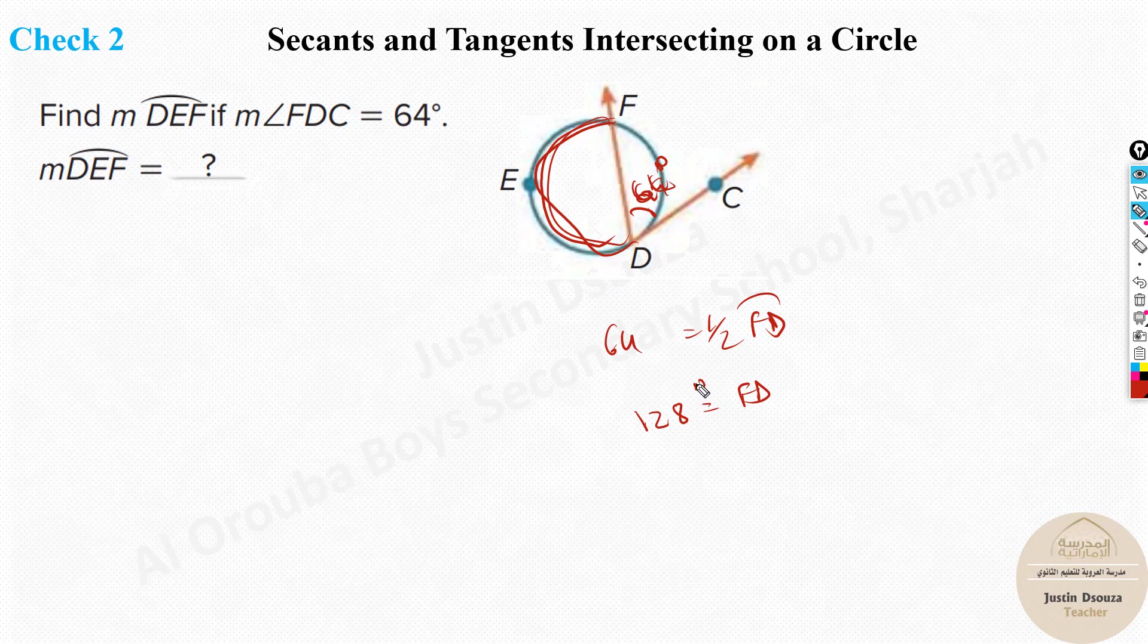Now, we have found F, D, but we need D, E, F. How would we find that? So we can do one thing. See, it's 360 degrees minus 128 degrees. That will give you the answer. So it will be 232. So that's the answer. Now, there is one more method to do it. This is the answer.